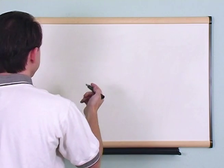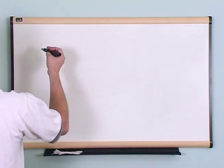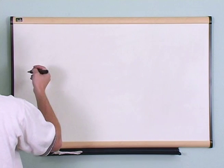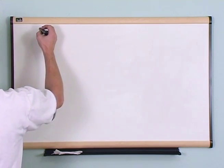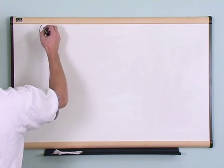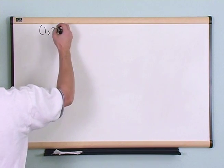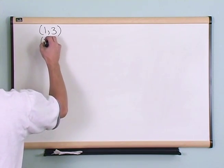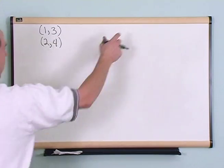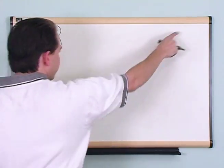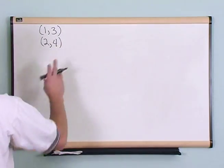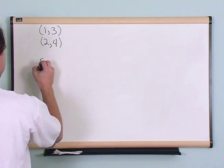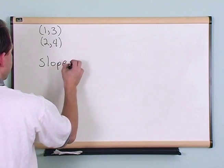I'm going to give you an equation to find the slope when you know two points on a line. So let's say you have two points: (1, 3) — that's one point — and (2, 4). We could draw a graph, plot those points, and get the line, but I'm going to define what we call the slope.